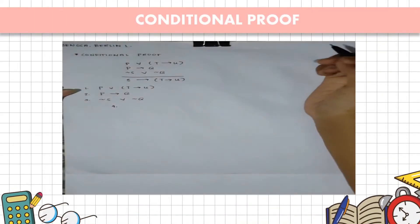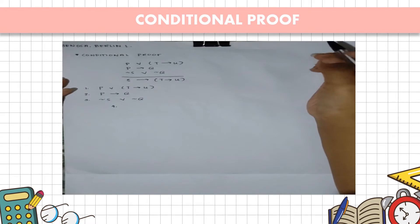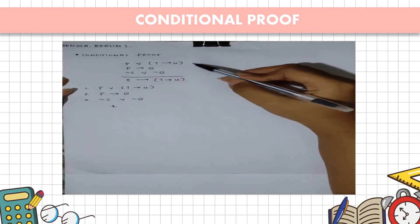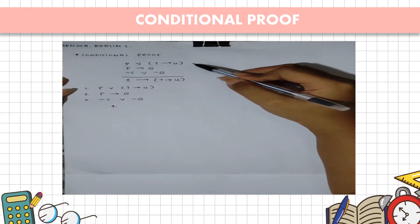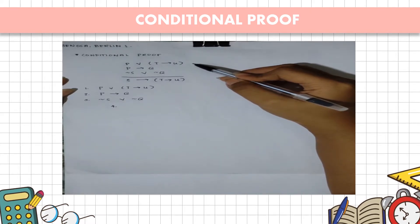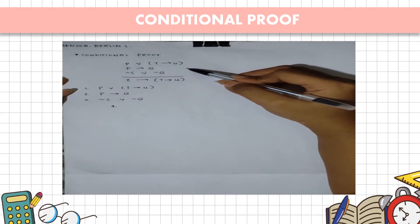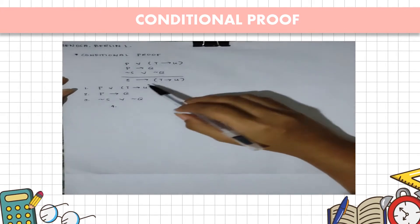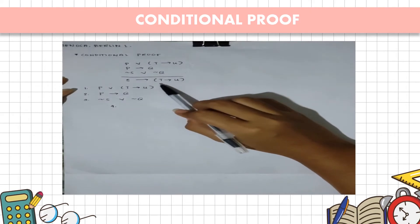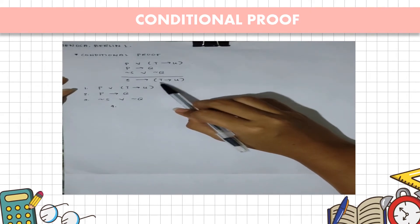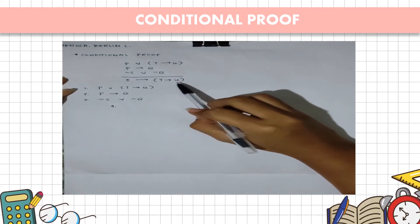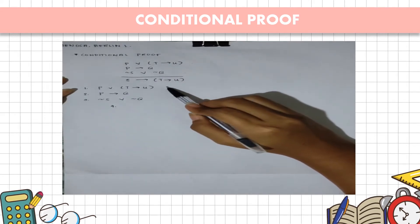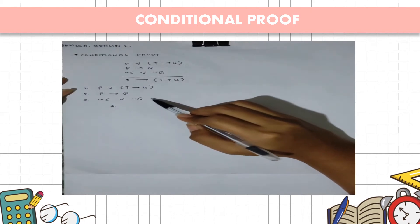Here is our example for conditional proof. We have three premises: premise 1 is the implication T implies U; premise 2 is P implies Q; and premise 3 is not S or not Q. We want to prove that S implies (T implies U) is true. We list down our premises.